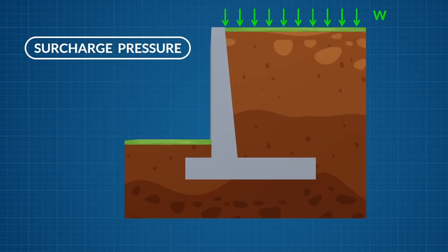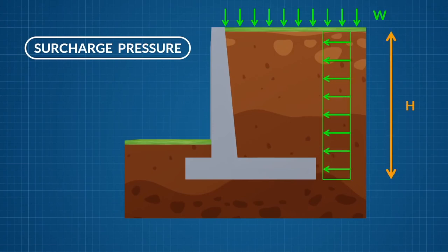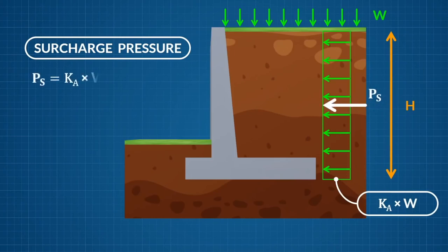Let's say the surcharge has an intensity of W kN per m² and is uniformly distributed. This pressure will act laterally on the wall, with an intensity of KA times W. The force due to this surcharge is the area of the rectangle which is KA times W times height.